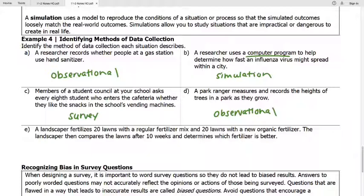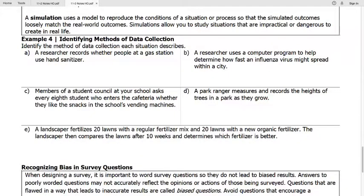And then last one. A landscaper fertilizes 20 lawns with regular fertilizer and 20 lawns with new organic fertilizer. And then they compare the lawns after 10 weeks. They have conducted an experiment.